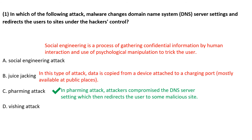In juice jacking, data is copied from a device attached to a charging point. Most of these charging points are located in public places.